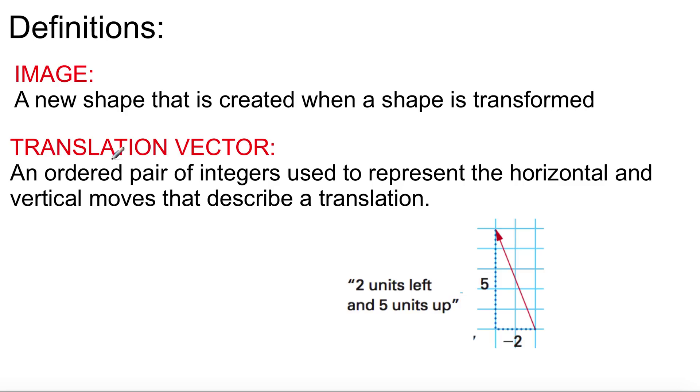Translation vector, get this down, this is really important. An ordered pair of integers used to represent the horizontal and vertical moves that describe a translation.